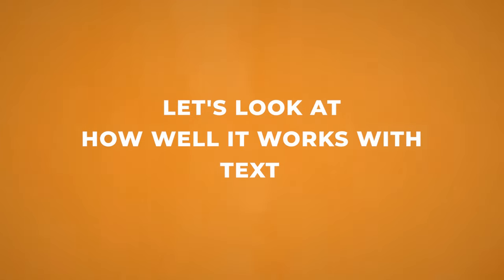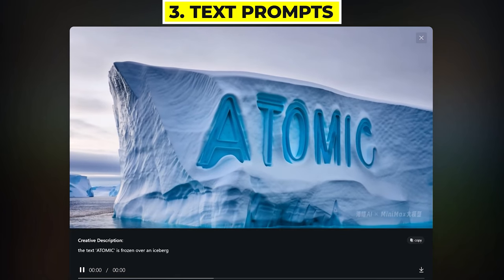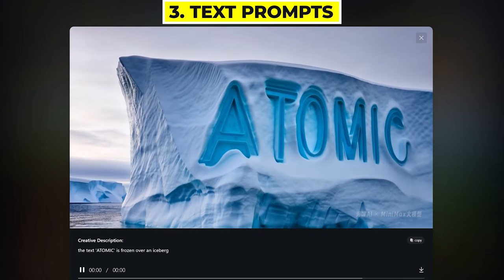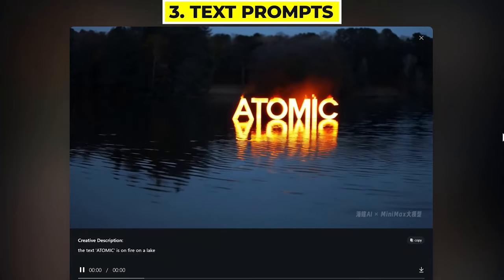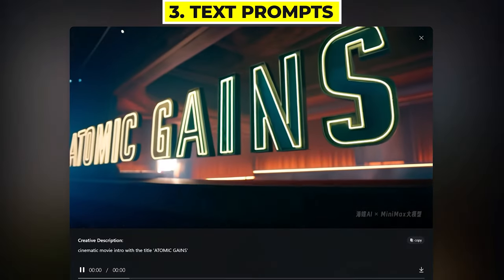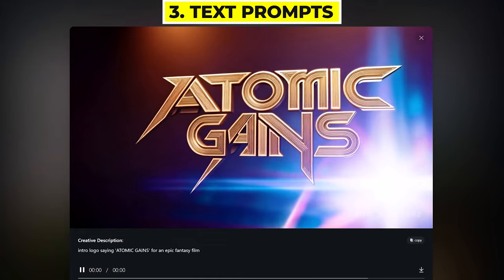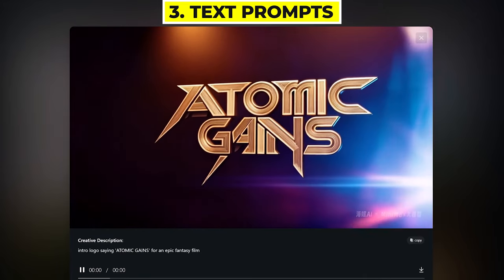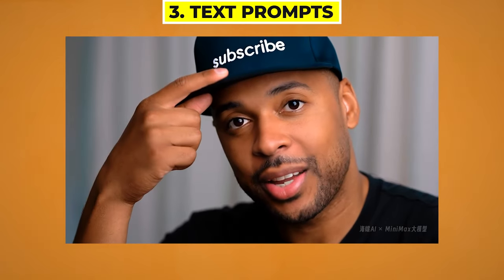Now let's have a look at how well it does text. This is some of the best text in video I've ever seen. For this prompt I just put the text 'Atomic is frozen' over an iceberg, and it spells it perfectly. With other video generators they tend to not get the text right all the time, whereas Minimax has got it right pretty much 99% of the time. Here's another example with the text 'Atomic is fire on a lake' — it's spelt correctly and has really nice reflections of the fire in the lake. I've got a cinematic movie intro with the title 'Atomic Gains' and it does a really cool camera movement. You could use this to create your own motion graphics and titles for your own project instead of going to other websites where you have to buy them — this is completely free, and you can just keep generating until you get the one you really like.